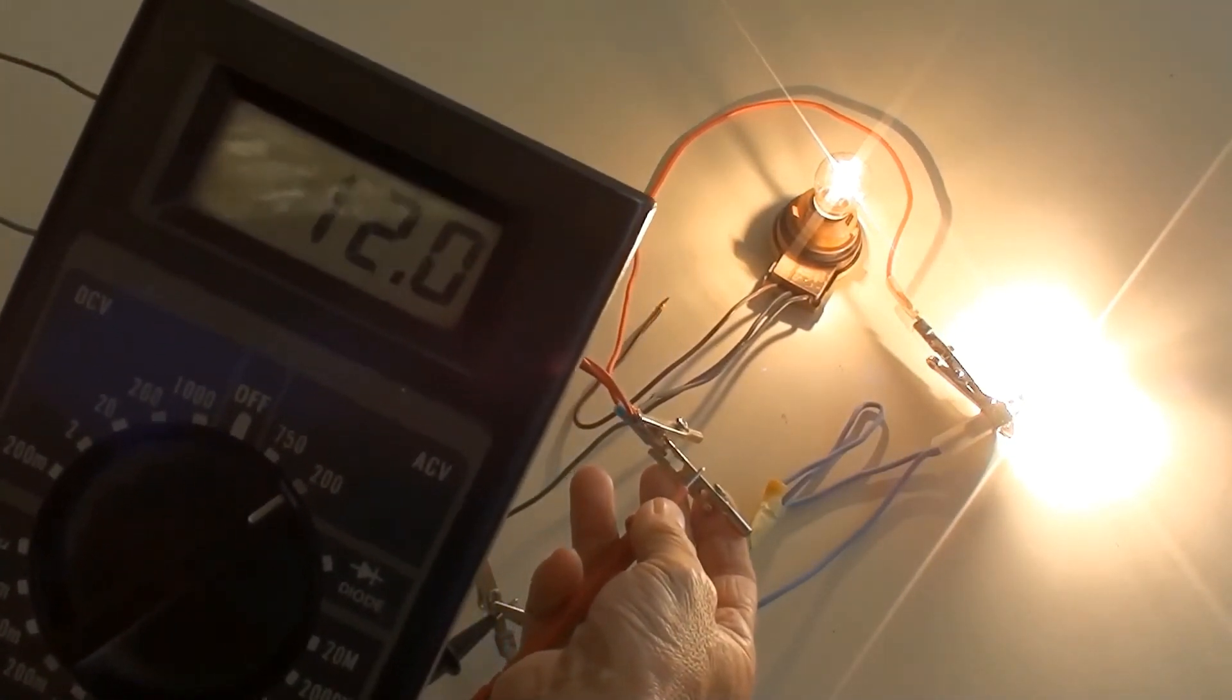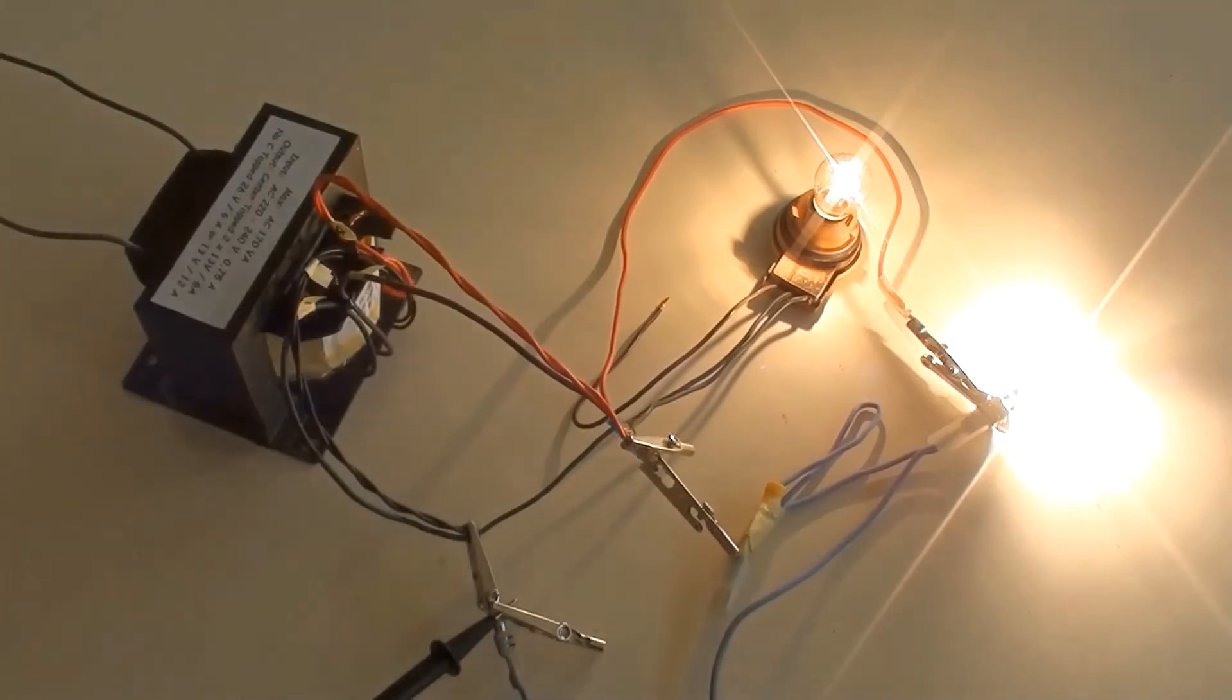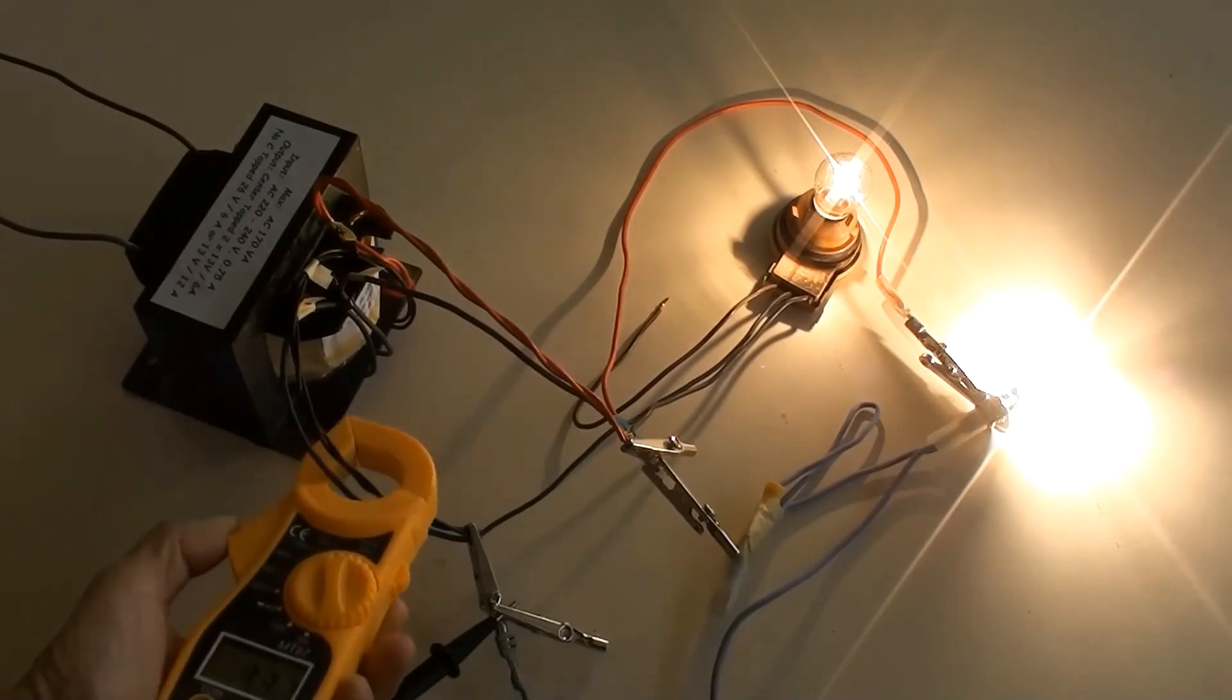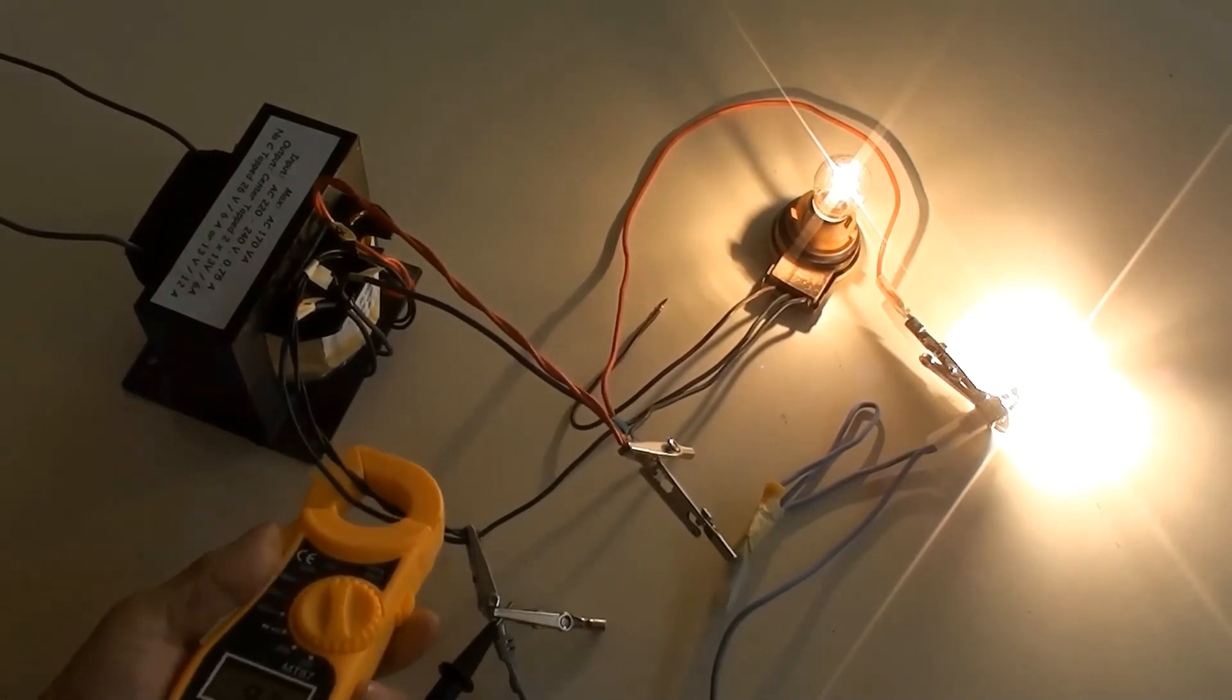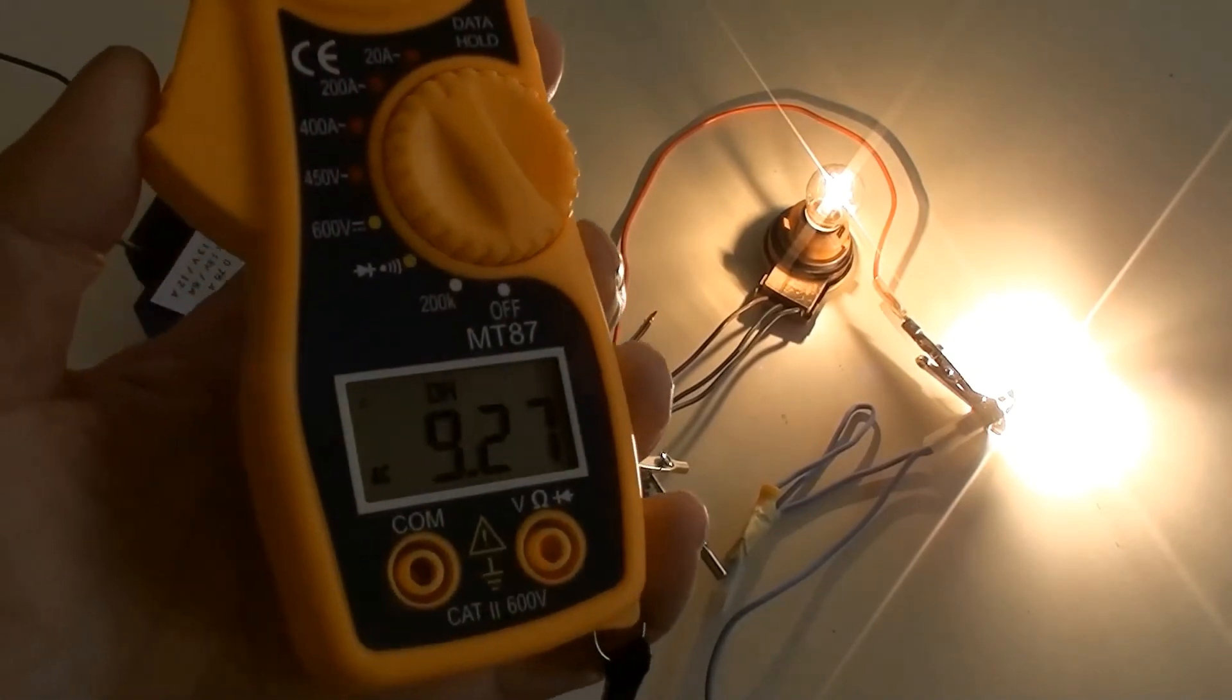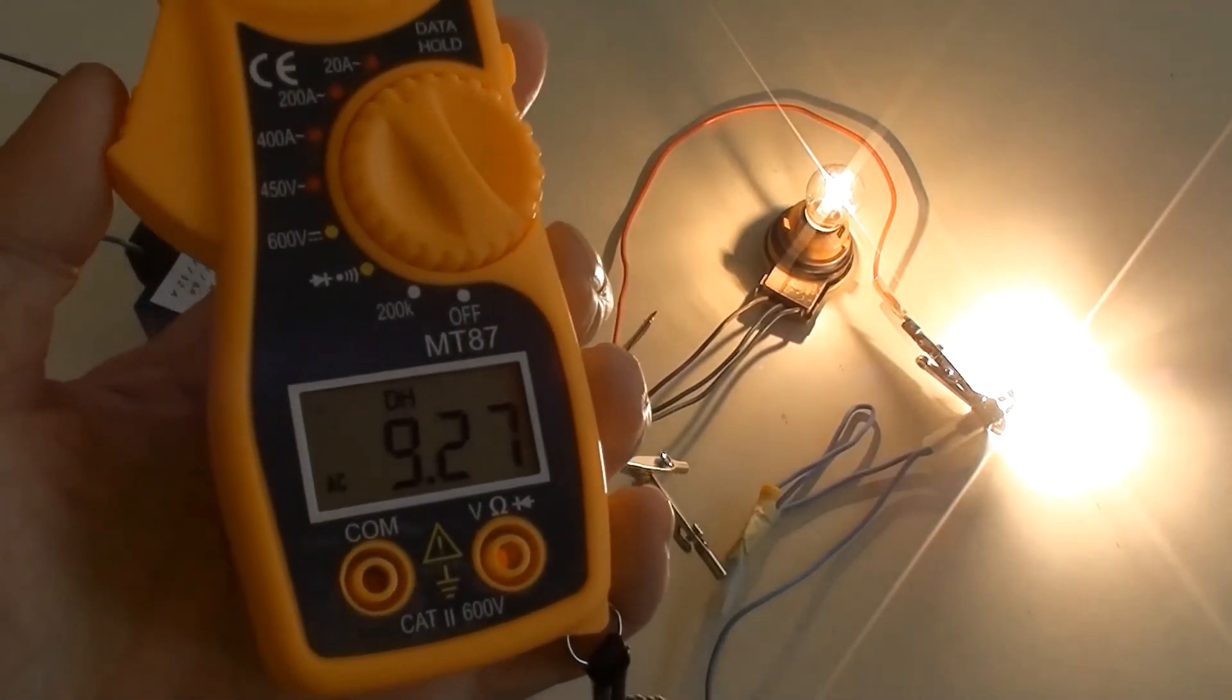At this stage the larger load connected with max output current option. Output voltage with this load was AC 12.7 volt. Current was AC 9.27 amperes.